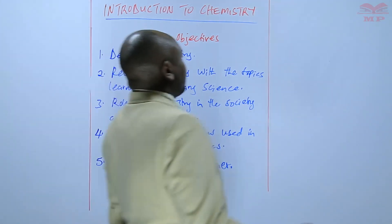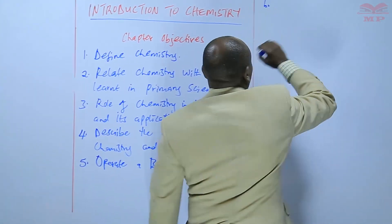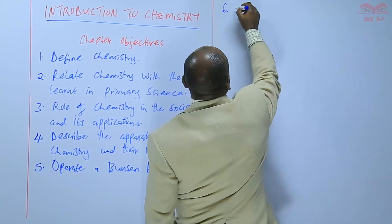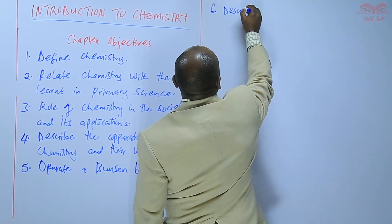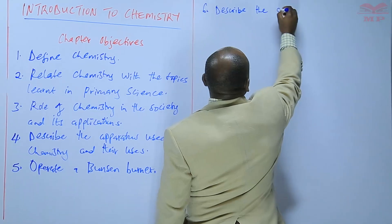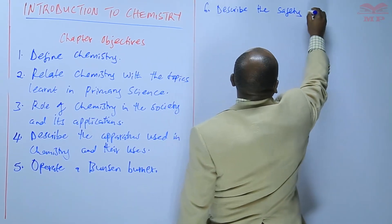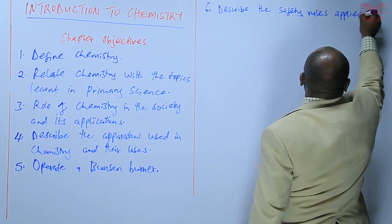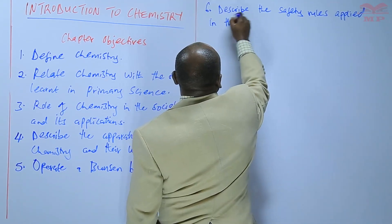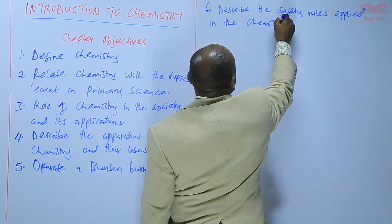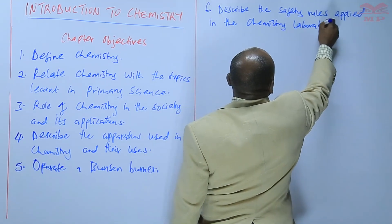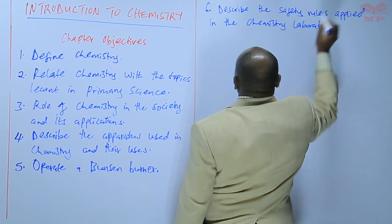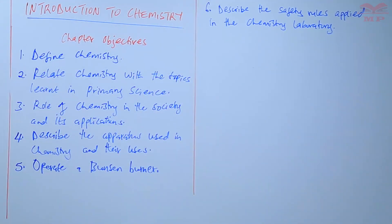And finally, the learner should be able to describe the safety rules applied in the chemistry laboratory. So basically, those are the objectives that the learner should understand.